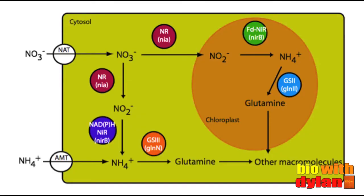There are a couple different enzymes in diatoms that like to hang out together and assimilate nitrogen into the cell. This cartoon is a proposal of what nitrogen assimilation looks like in the cell of a diatom. We have enzymes working in the cytosol, which is the green, and we have enzymes also working in the chloroplast, which is the orange.